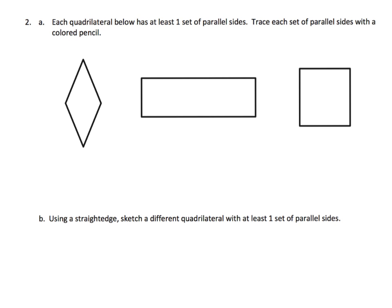So here it says each quadrilateral has at least one, and that's the important phrase, at least one set of parallel sides. Trace each set of parallel sides with a colored pencil.